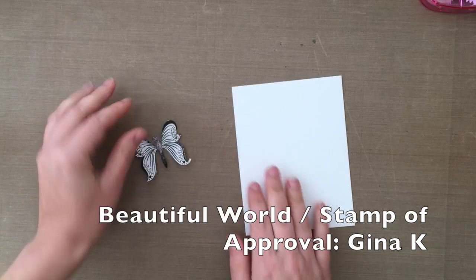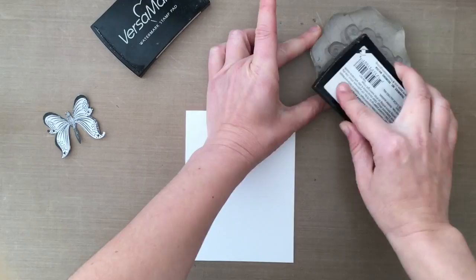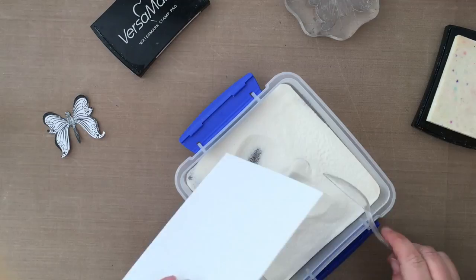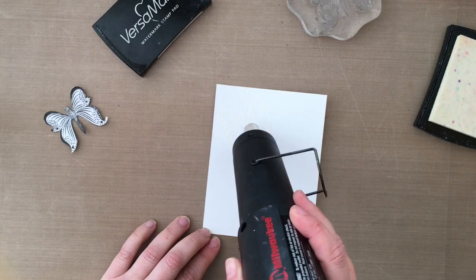This is the Beautiful World stamp set in the collection, made by Gina K. I'm going to take one of those beautiful butterflies. I have a thing for butterflies after seeing this set and I just love it. I'm going to ink it up along the left-hand side of my card.